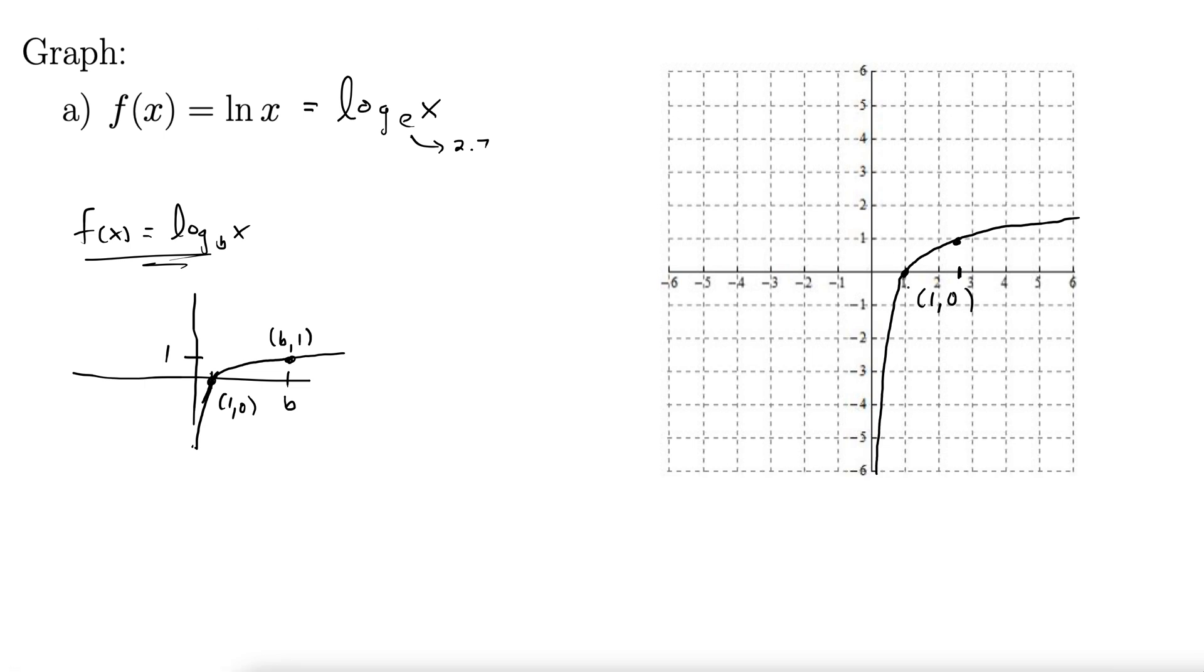We already got (1,0) there. That's this one, and up here we have (e,1). All right, so there's the graph of natural log of x. Let's take a look at some reflections and translations of this graph.